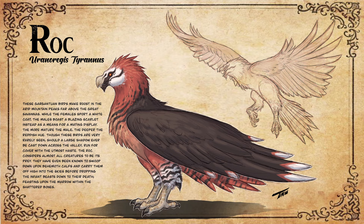And here we have the completed entry for the Roc. Scientific name, Uranoregis tyrannus, which means tyrant sky king. And for its lore: these gargantuan birds make roost in the arid mountain peaks far above the great savannas. While the females sport a white coat, the males boast a blazing scarlet instead as a means for a mating display. The more mature the male, the deeper the reddish hue. Though these birds are very rarely seen, should a large shadow ever be cast down across the valley, run for cover with the utmost haste. The Roc considers almost all creatures to be its prey. They have even been known to swoop down upon Behemoth calves and carry them off high into the skies before dropping the infant beasts down to their death, feasting upon the marrow within the shattered bones.